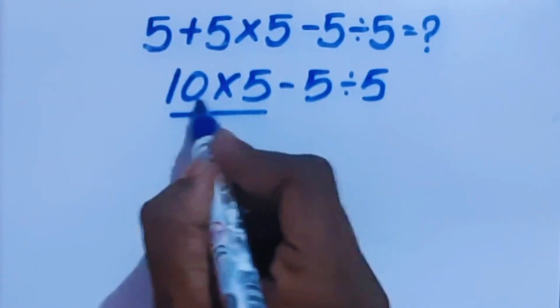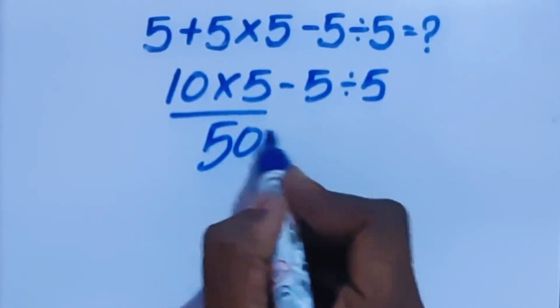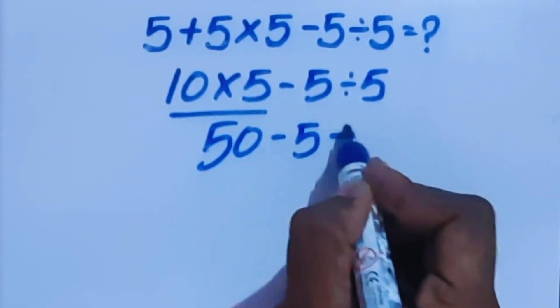Here, 10 times 5 is 50 minus 5 divided by 5.